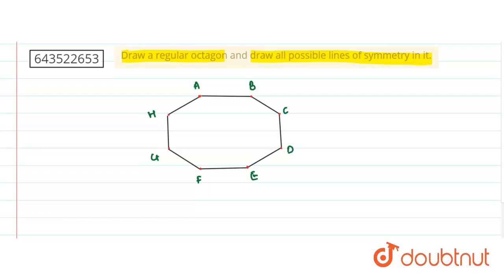Now how we can draw the line of symmetries? So line of symmetry means what? It divides the geometrical shape into two equal parts. So this one is a line of symmetry.